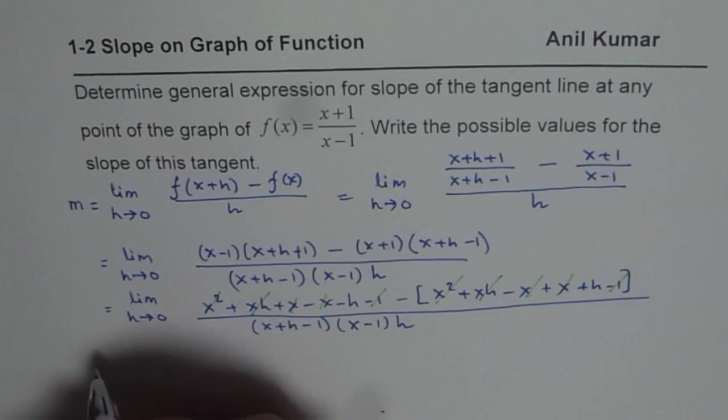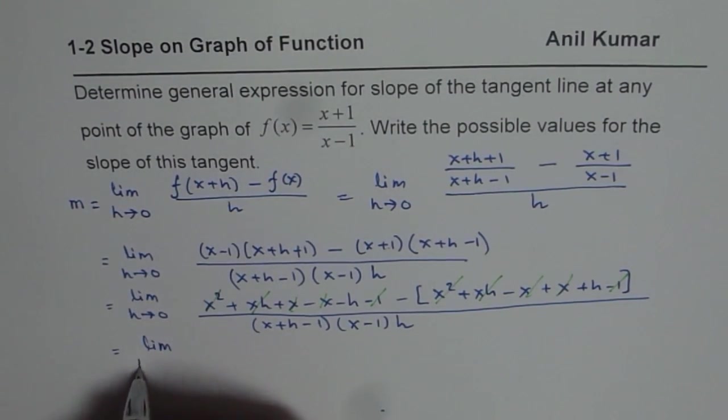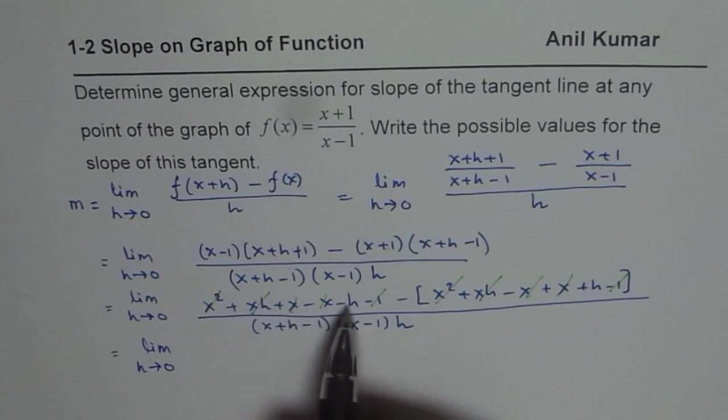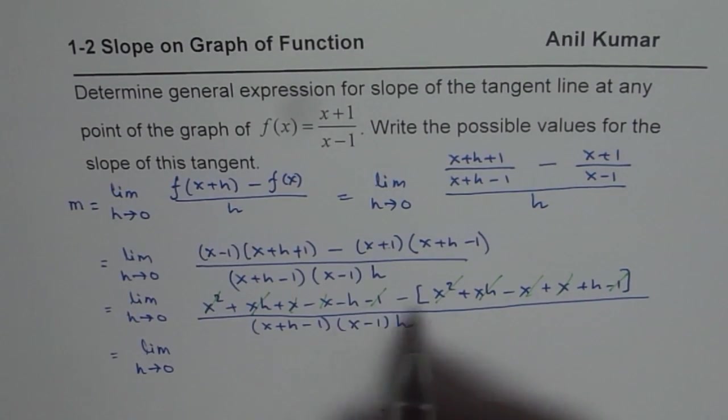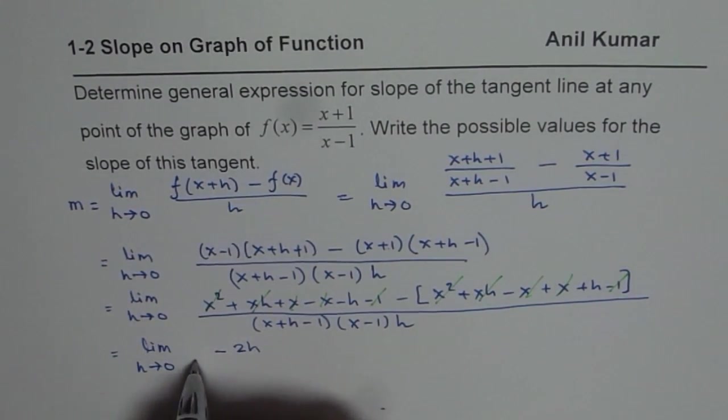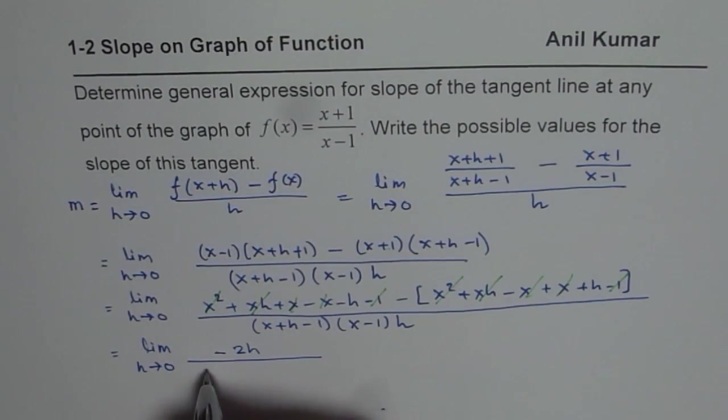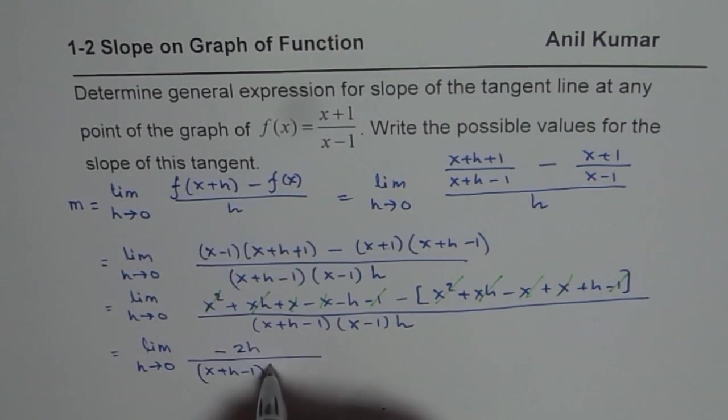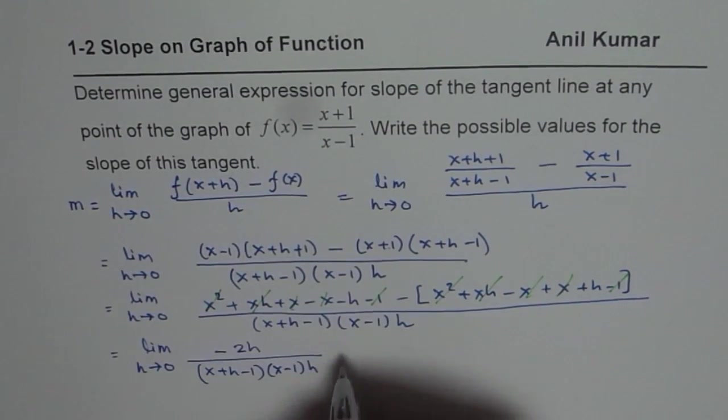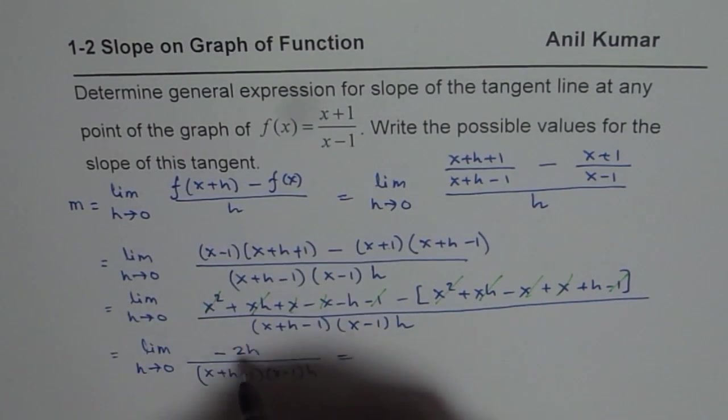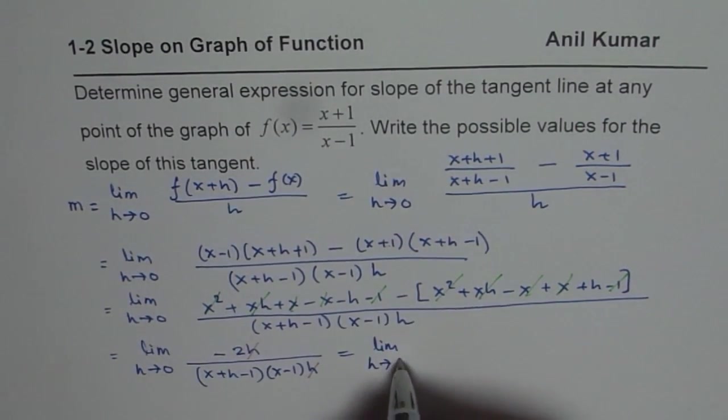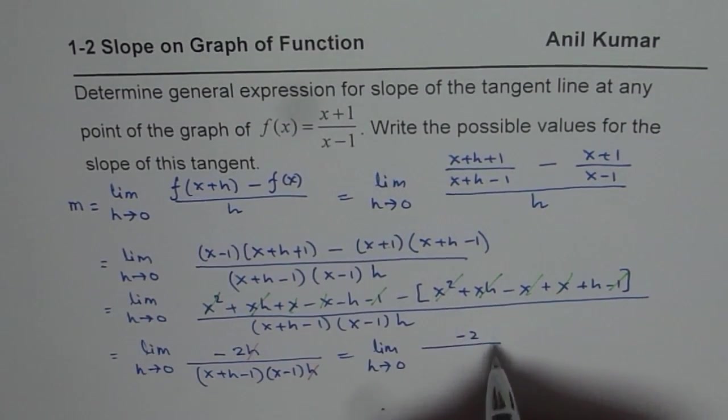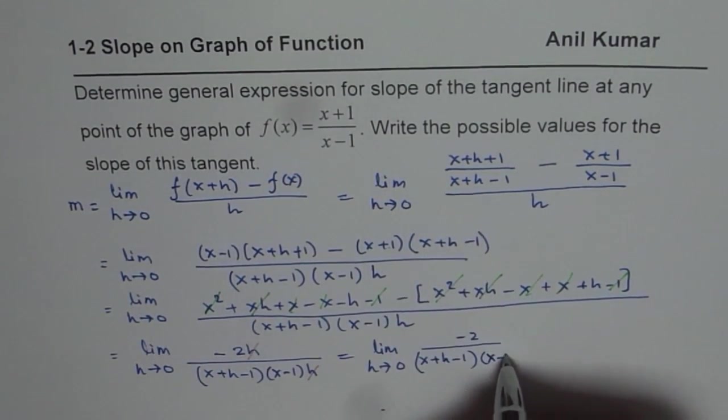What we can now write this as equal to limit as h approaches 0. In the numerator, we have minus h and minus of plus h, that means minus 2h. So we have -2h divided by (x+h-1)(x-1)h. Now, you can cancel h and h. So you get limit h approaches 0, -2/[(x+h-1)(x-1)].